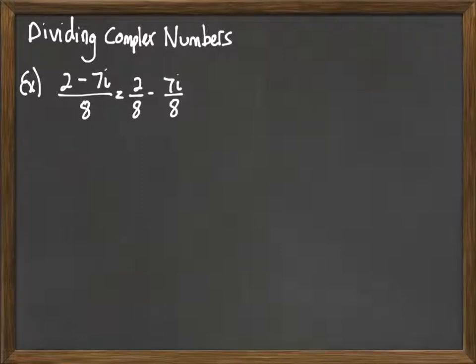And then we can just follow through and simplify. 2 over 8 is the same as one-fourth. 7i over 8 is 7 over 8 i. And then we're done. We have the answer one-fourth minus seven-eighths i. So the result is in the form of a complex number. So we're done.